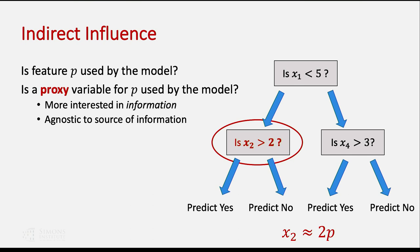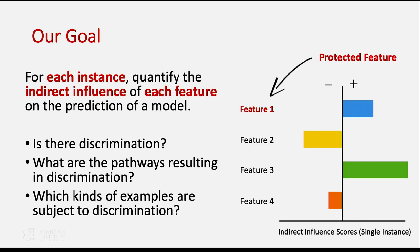The other notion we're interested in is indirect influence. Here we ask: is the feature p used by the model, or additionally, is a proxy for p used by the model? In this decision tree, feature p doesn't appear, but there's a feature x2. Instead of asking if p is greater than one, we're asking if x2 is greater than two. In general, x2 is about equal to 2p, so it's using similar information — information from p might still be determining decisions even though p isn't directly used. Our goal is, for each instance in our dataset, to quantify the indirect influence of each feature on the prediction of a model, so we can see across the dataset how features are being treated and identify proxy variables and which examples are subject to discrimination.